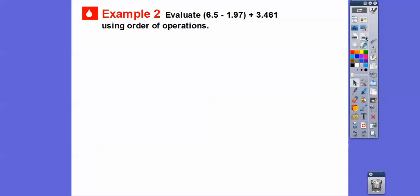So here's another example. We'll evaluate 6.5 minus 1.97 in parentheses, and then we're going to add 3.461 using the order of operations. Our order of operations says we have to do the parentheses first. So let's subtract 6.5. Notice we added a 0 right there, 6.50 minus 1.97. Now I can't do 0 minus 7, so we have to borrow from the 5 and make it a 4. So 10 minus 7 is 3. Then we're going to do 4 minus 9. We can't do 4 minus 9, so we'll borrow from the 6 and make this a 5 and make this 4 a 14. So 14 minus 9 is 5, and then 5 minus 1 is 4.